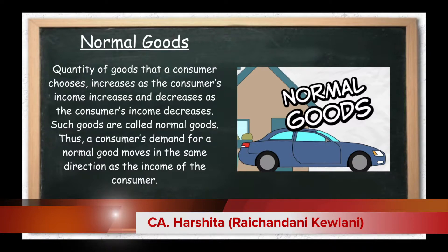For example, in a simple example: when your income is limited and you have less income, you can purchase a cycle because you can afford that. But if your income increases, you upgrade from the cycle. These two move in the same direction — income and demand go together.